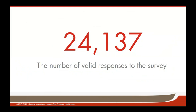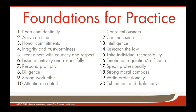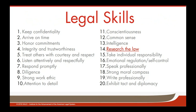We surveyed lawyers across the country and received over 24,000 valid responses from attorneys in all 50 states across a wide variety of practice settings — from private practice and in-house counsel to government attorneys and public defenders. From a list of 147 different legal skills, professional competencies, and characteristics, our respondents identified 77 foundations that they believe new associates need right out of law school. This is what the top 20 items chosen by practitioners across states and practice areas looks like — these had the most respondents saying they were necessary right out of law school.